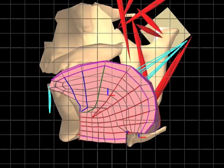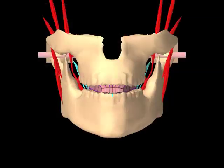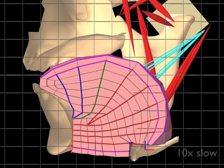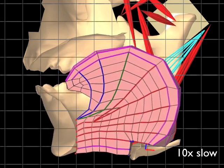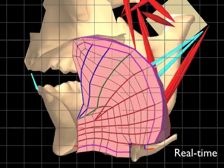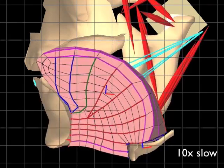Jaw tasks were tested by activating jaw muscles with the tongue at rest. Speech-like tongue movements were also evaluated, including tongue retraction. Contact between the tongue and palate, which is important in speech production and swallowing, was also simulated.